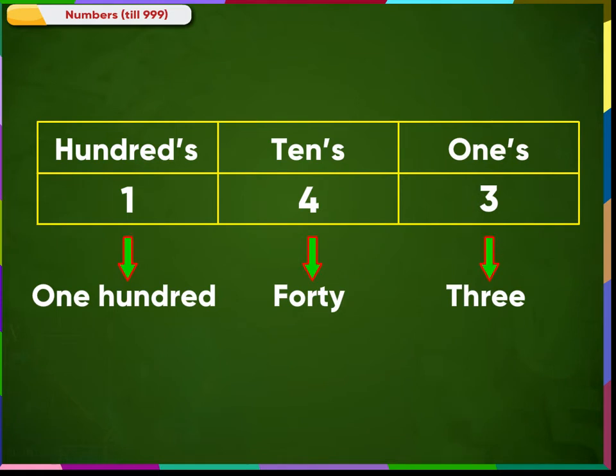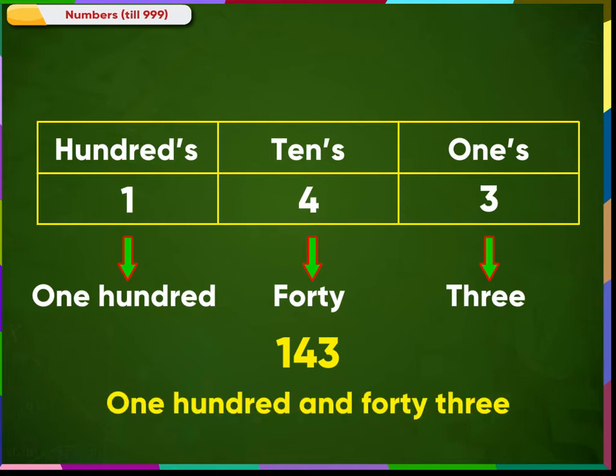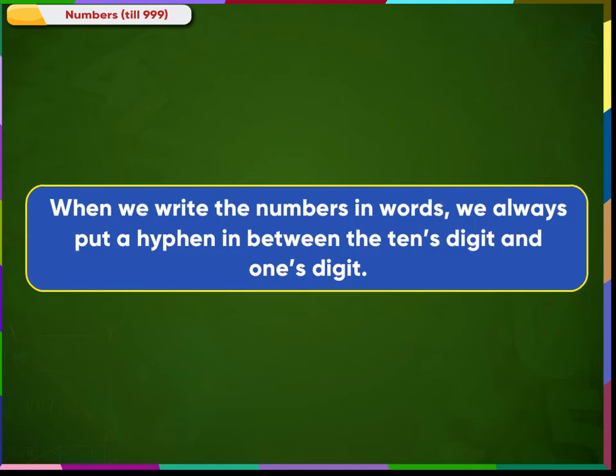So the number 143 is written as one hundred forty-three in words and also read in the same manner. Note the small hyphen here. When we write the numbers in words, we always put a hyphen in between the tens digit and ones digit.